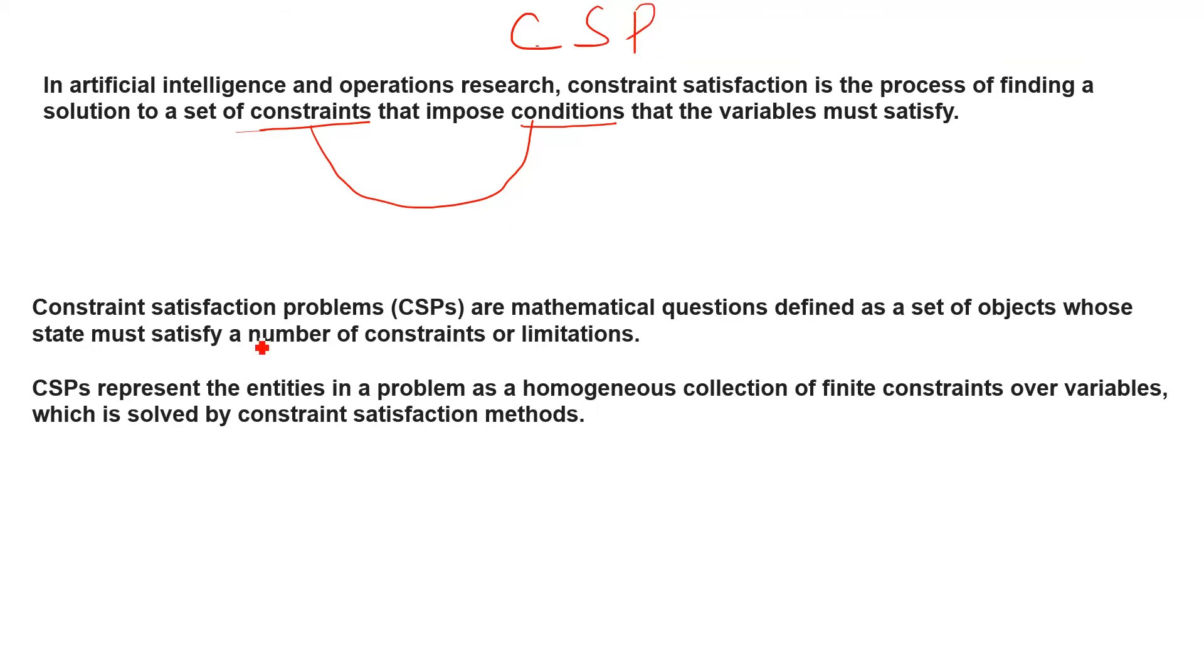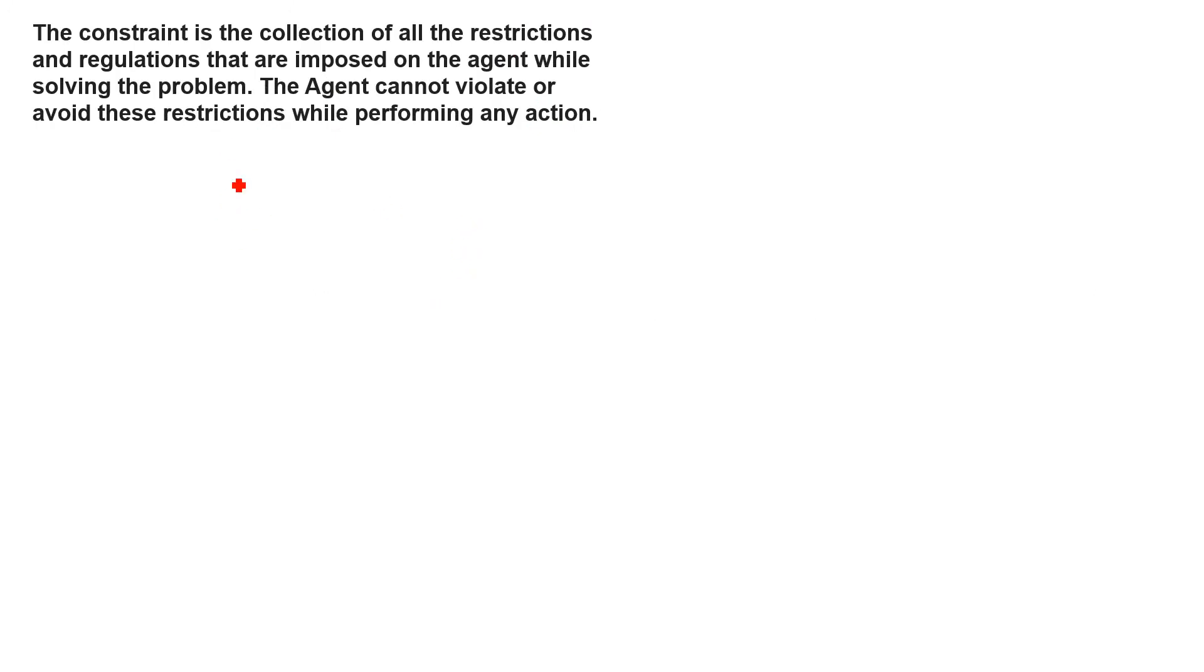Even if you will read this, CSP are mathematical equations defined as the set of objects whose state must satisfy a number of constraints or limitations. What is the meaning of this? No worries at all. I will explain with the help of example, then we will come back to this slide and read it. In CSP problem, you have to consider three things. The first one is called the variables. Second one is domain. And third one is constraints.